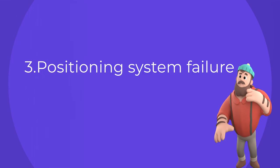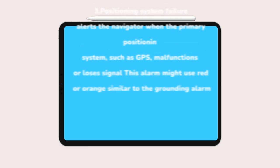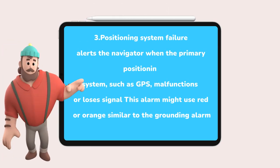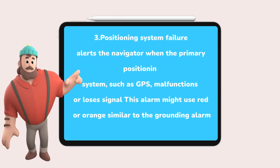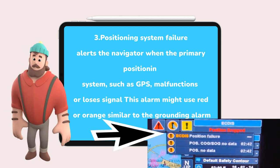3. Positioning System Failure. This alarm alerts the navigator when the primary positioning system, such as GPS, malfunctions or loses signal.